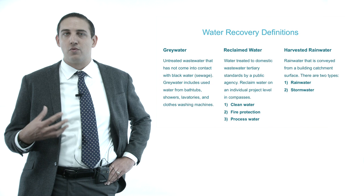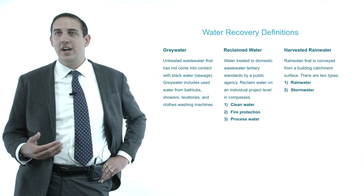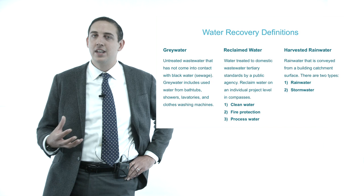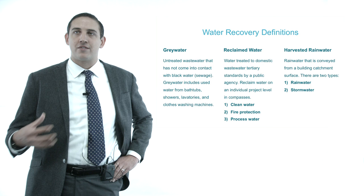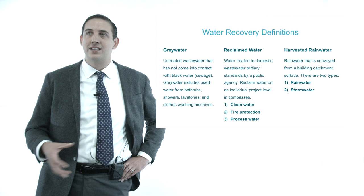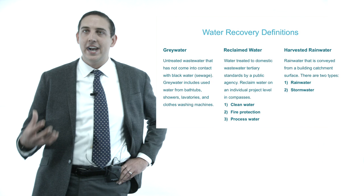Harvested rain water is broken down into two distinct classifications. Rain water is any water which is captured solely from a roof surface. And then storm water is any water from precipitation which is captured from any other source — parking lots, streets, pedestrian walkways, fields or agriculture, or even captured in a pond or in a natural fountain.